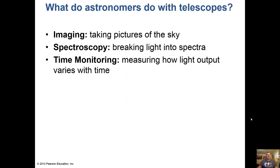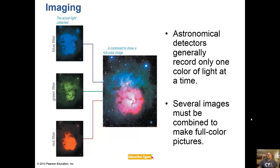What do we do with telescopes? We do imaging — taking pictures of the sky — but that's really not most of what's done in astronomy. About 80% of astronomy is actually spectroscopy, breaking the light into spectra, which we mentioned in chapter five. The other major use is time monitoring — measuring how light output varies with time. I did eclipsing binary stars, which are two stars that orbit each other and eclipse each other like a lunar or solar eclipse.